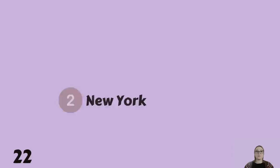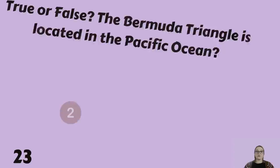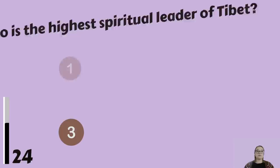True or false: the Bermuda Triangle is located in the Pacific Ocean. That would be false. It's in the Atlantic Ocean.